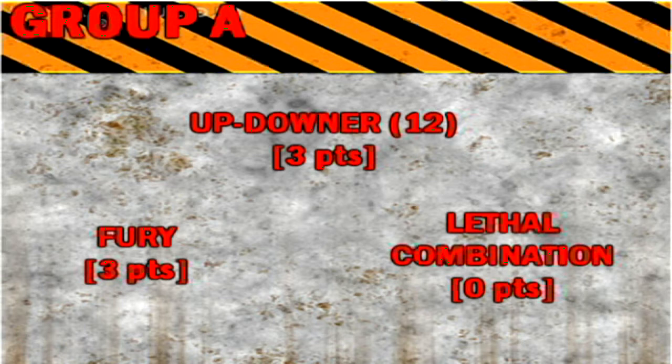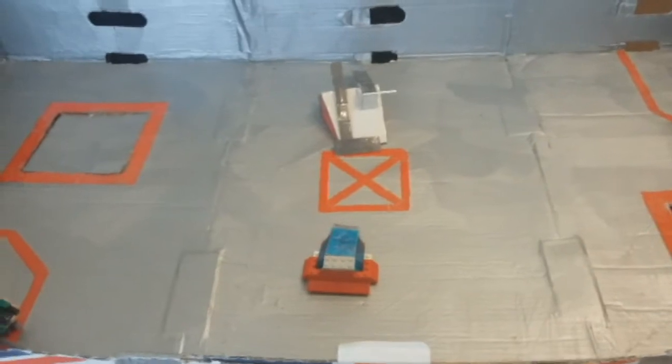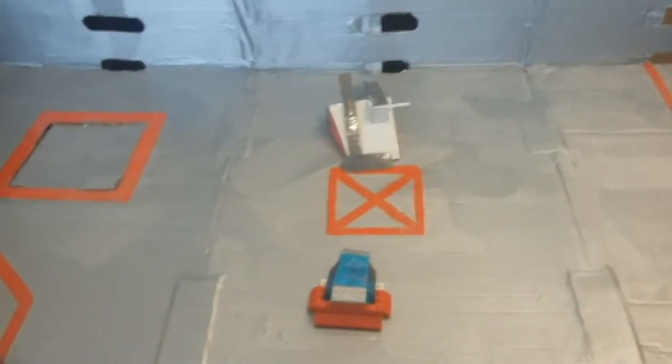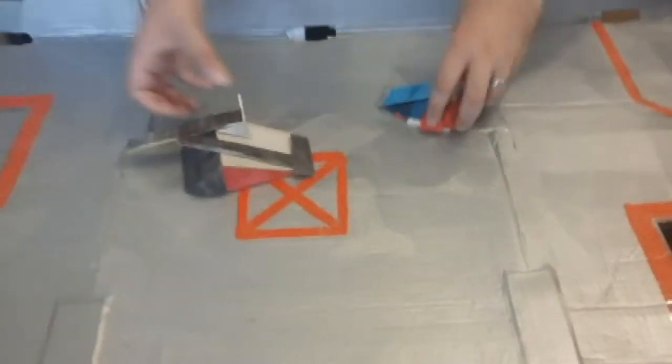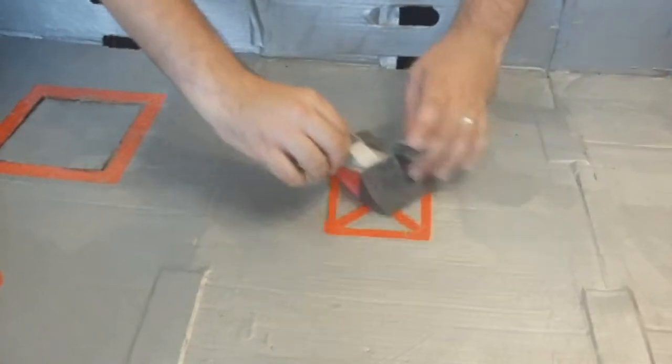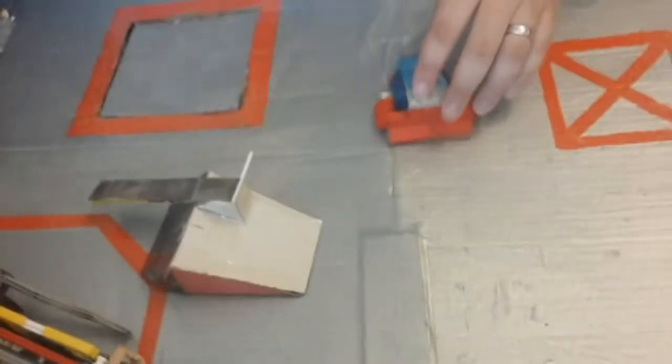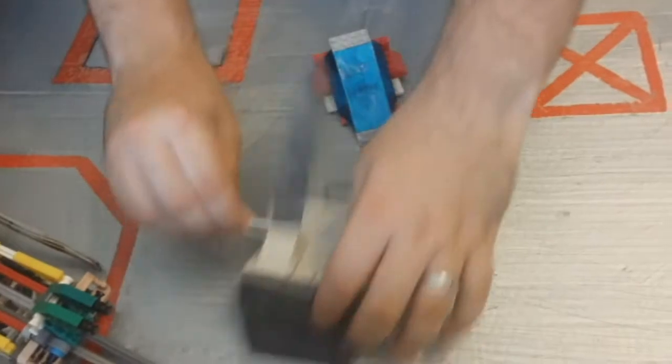Lethal Combination needs to win this battle against Up Downer to take it to a tie break. Robotiers, stand by. Three, two, one. Activate. Up Downer are the favorites. They're getting flipped into the air immediately by Lethal Combination. Lethal Combination's axe now coming down on top. And I think, yes, look at that. I think they've punctured them. That is an incredible amount of power to puncture Lego armor with an axe.